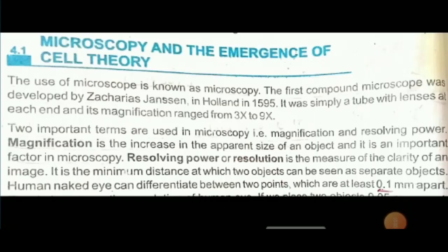The first topic we are going to discuss today is microscopy and the emergence of cell theory. As it is clear from its name, microscopy is basically the use of microscope. The first compound microscope was developed by Zaccarius Janssen in Holland in 1595. It was simply a tube with lenses at both ends.